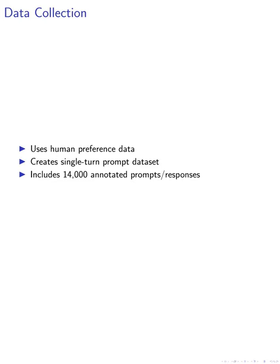We then leverage human preference data about harmlessness from Anthropic to collect data for training LlamaGuard. We use the first human prompt and discard the corresponding response, as well as other turns, to create an initial single-turn prompt dataset. Expert annotators from our in-house red team label the prompt and response pairs based on the defined taxonomy. The dataset comprises nearly 14,000 prompts and responses with annotations.